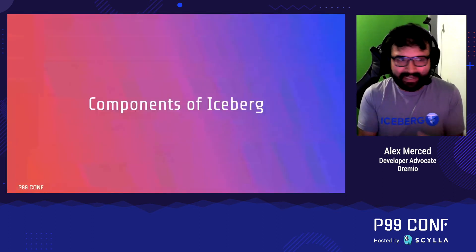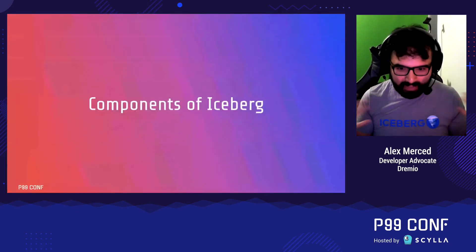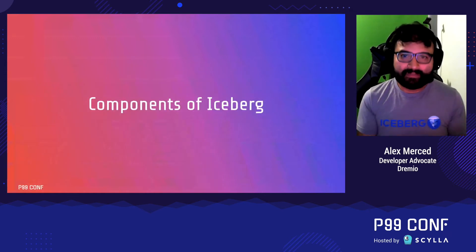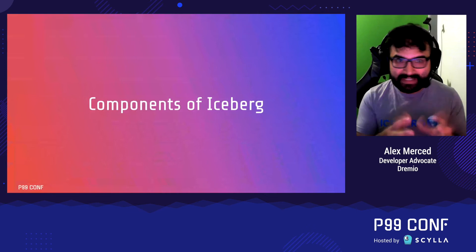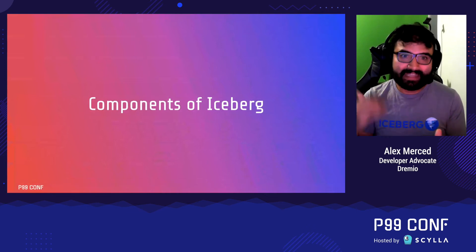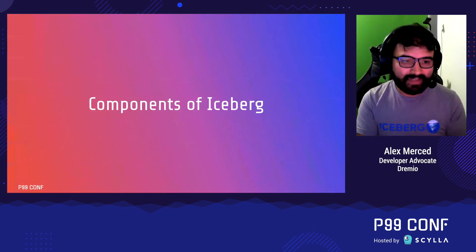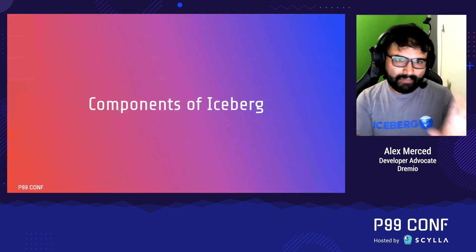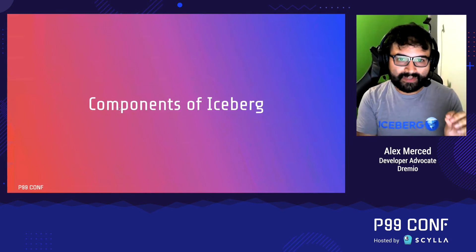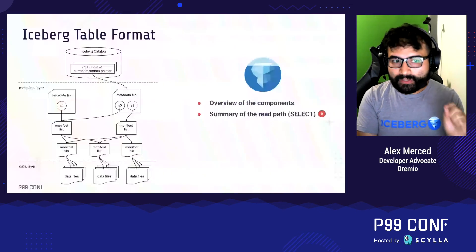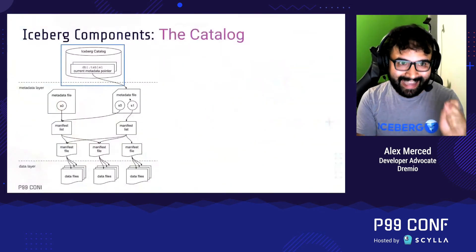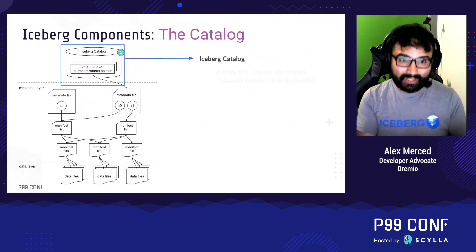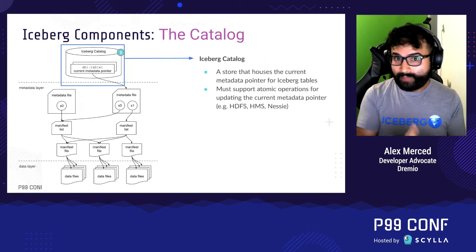So let's talk about the architecture of Iceberg — what everyone's so excited about in this new era of data lakehouses, where people need to decide which table format to use. This is a picture of the Iceberg format, which is made up of several different components. The first component is the catalog — essentially the phone book. It tells you: I'm looking for table one, and next to that entry is where table one exists, pointing you to the metadata for that table.